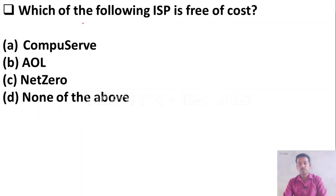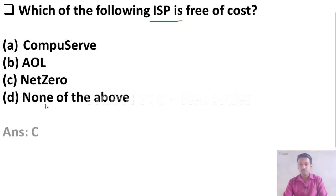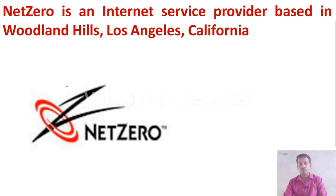Which of the following ISP is available free of cost? Option A: CompuServe, Option B: AOL, Option C: Net Zero, Option D: None of the above. The right answer is Option C, Net Zero. It is an internet service provider available free of cost, based in California.